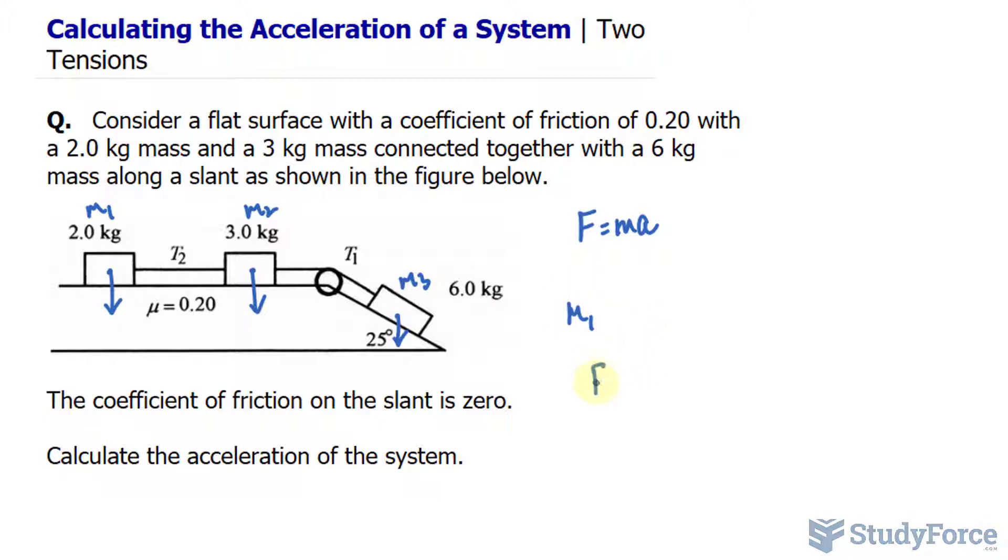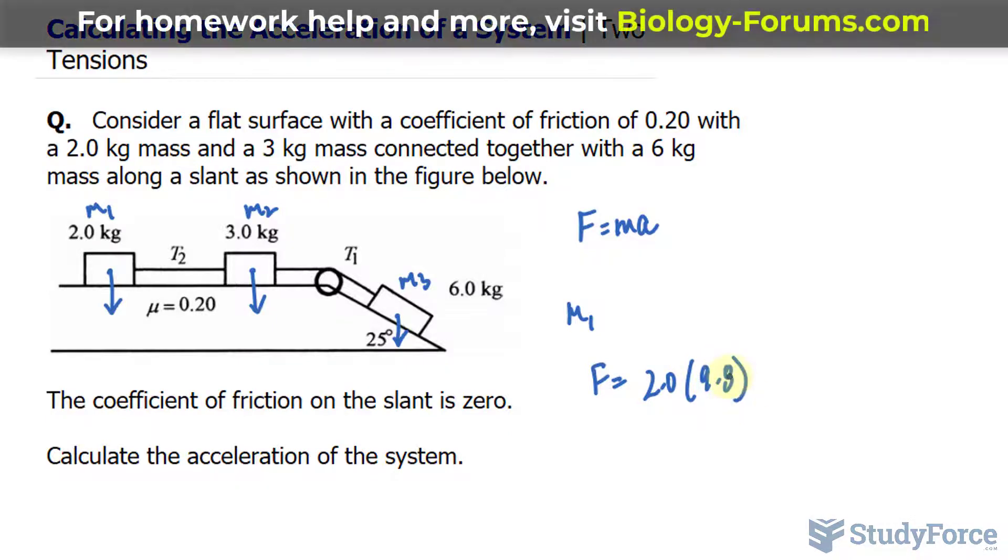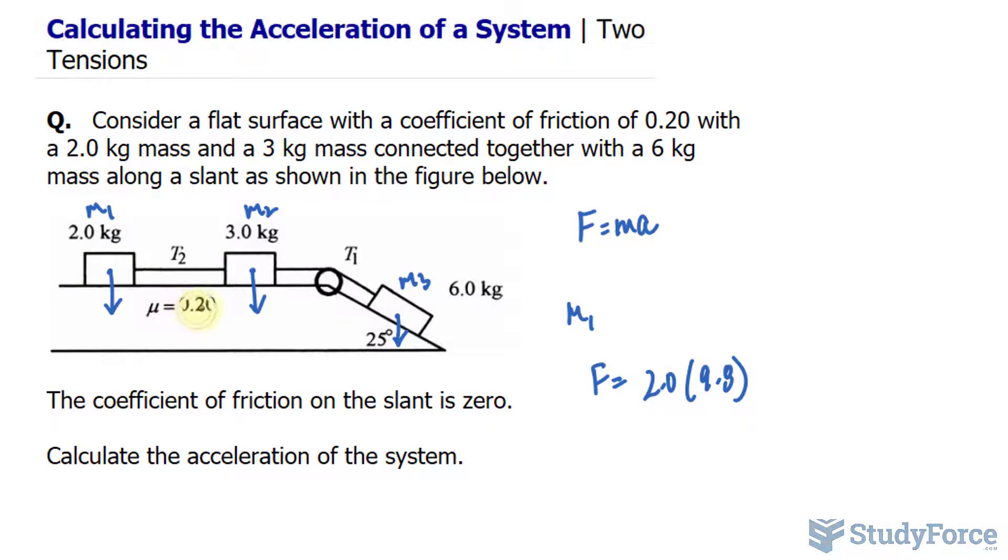Starting with mass one, we have force is equal to its mass of 2.0 times the acceleration due to gravity being 9.8 meters per second squared. And remember that these two have a coefficient of friction being mu is equal to 0.2. So I'll multiply this by 0.2.